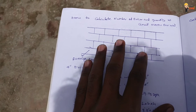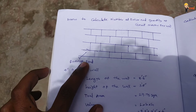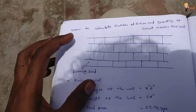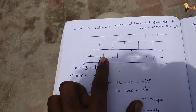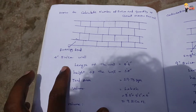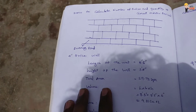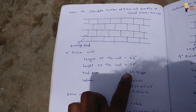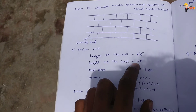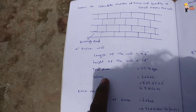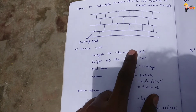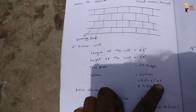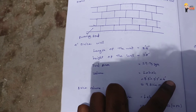We have a 4-inch brick wall. This is the structure of the wall — it has a zigzag pattern with 4-inch bricks. The total area is 25 square feet. The volume is calculated as L into B, where L is the total length of the wall.